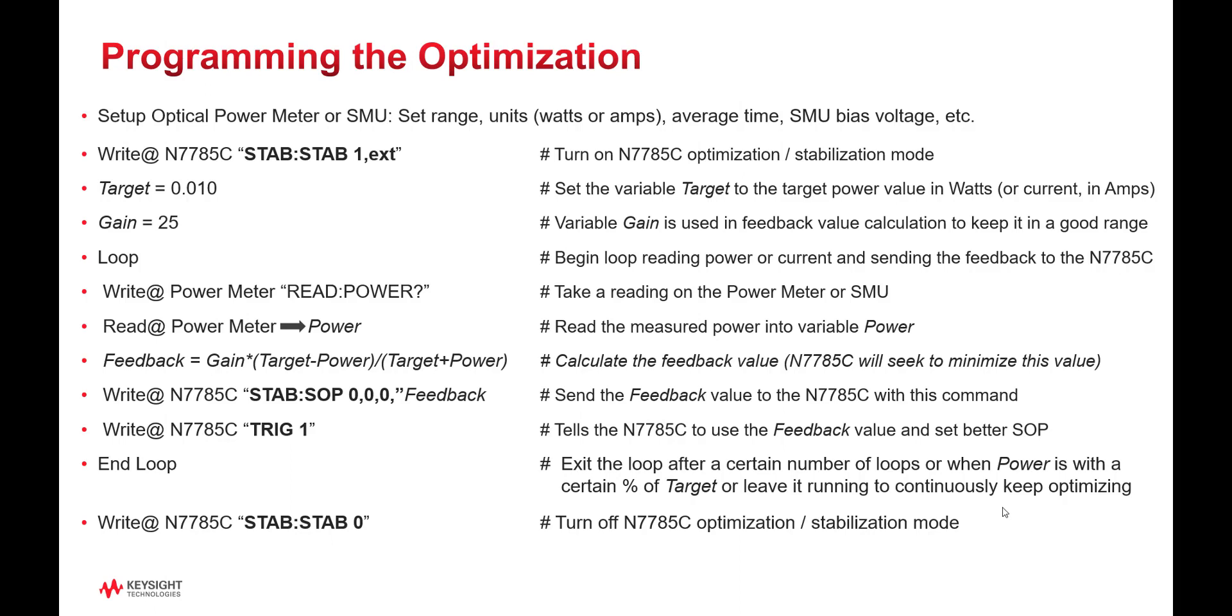Programming the optimization is fairly simple. The first step is to set the basic parameters for the optical power meter, or if you're measuring current, the SMU. For example, setting the correct range, setting the units. This needs to be done in linear units.